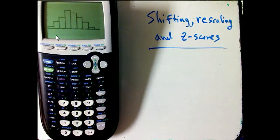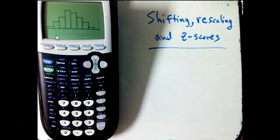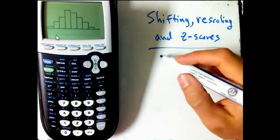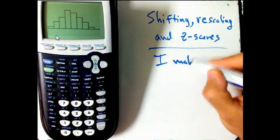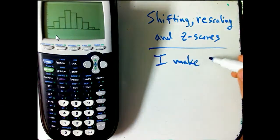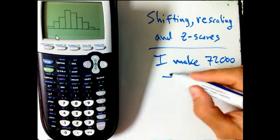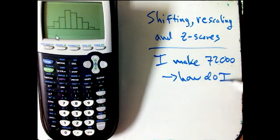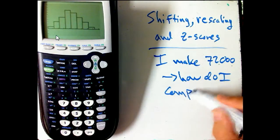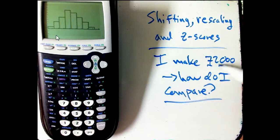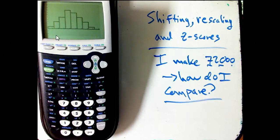So I wouldn't be super confident saying that this corresponds to a normal model. We couldn't make all the conclusions based on a normal model here, but we could at least do part of the story in the chapter on normal models, which is shifting and rescaling it. And in particular, if I'm a new person to this company and I make, let's say, $72,000, how do I compare?